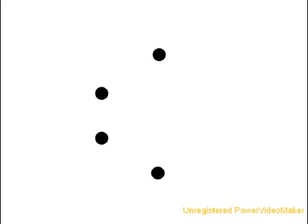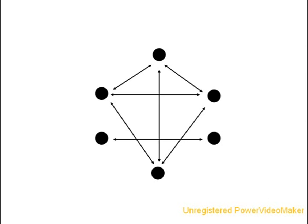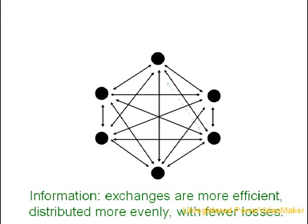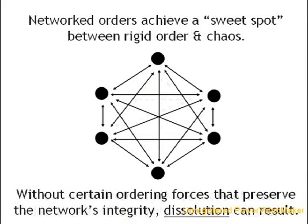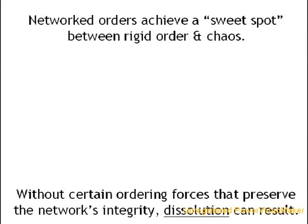In a network, activity happens from the bottom up — there are no controller nodes. Rather, peer-to-peer relationships form in collaboration. Networks are often more efficient and are less likely to lose information, because information and decision-making power are more evenly distributed around the system. Without a single node in charge, however, networks are limited in their ability to make a single system-wide course of action. Networked orders achieve a sweet spot between the rigid order of a hierarchy and the chaos of unconnected nodes, but without certain ordering forces that preserve the network's integrity, dissolution can result.